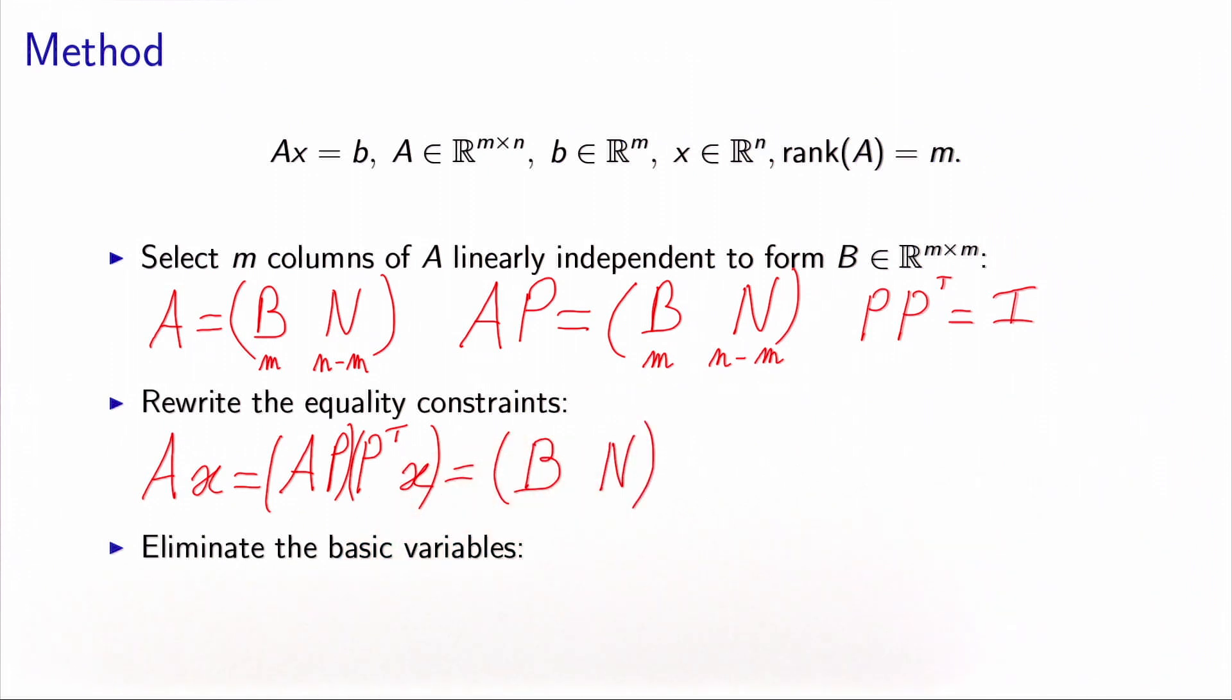And P transpose x is nothing else than the set of variables which has been renumbered in order to be consistent with the new numbering of the columns of the matrix. So what we will do is that we will write x subscript B to consider the m components of the vector x which correspond to the m columns of B, and xN, which will be the other components of the vector x, those that correspond to the columns of N. So this can be written B times xB plus N times xN, and this must be equal to b to verify the constraints.